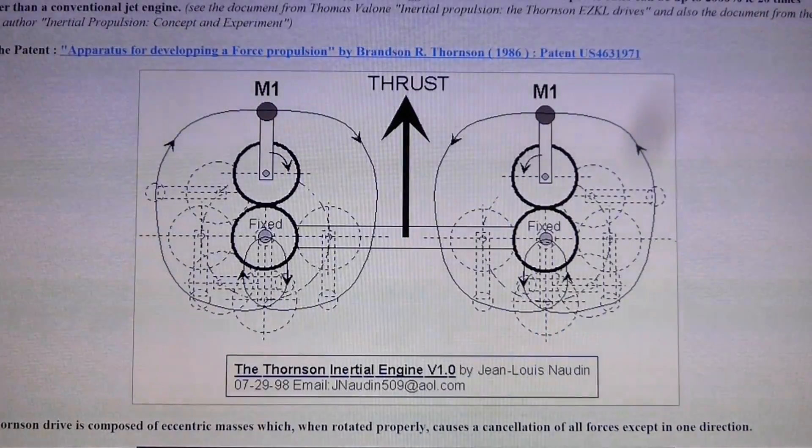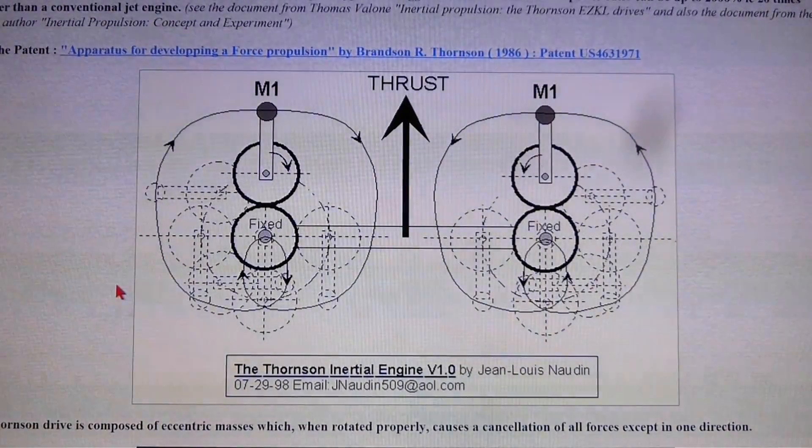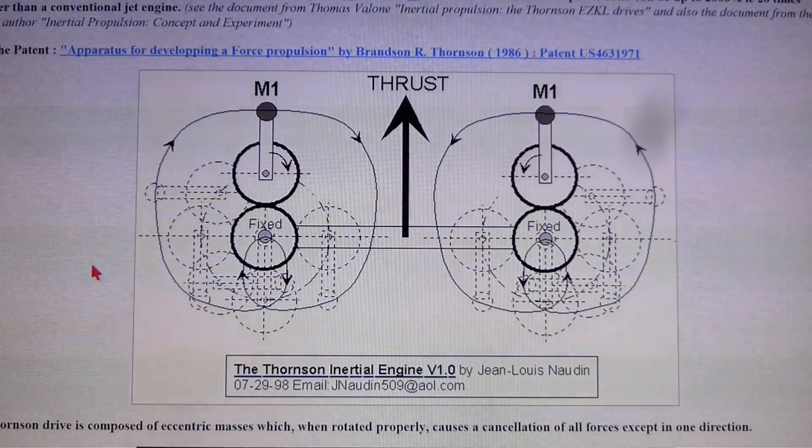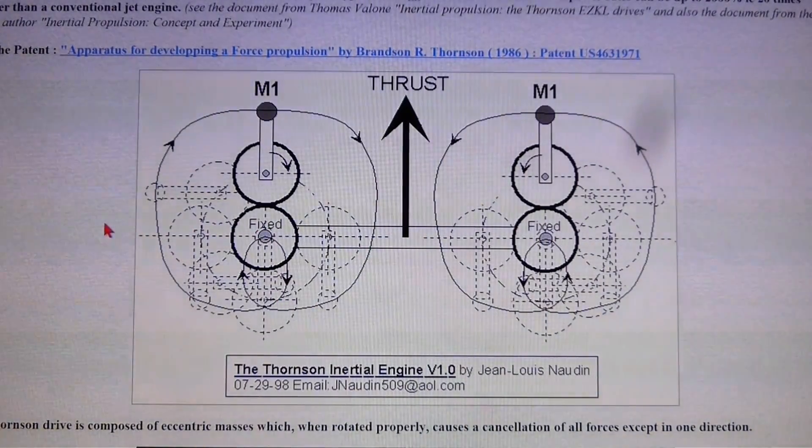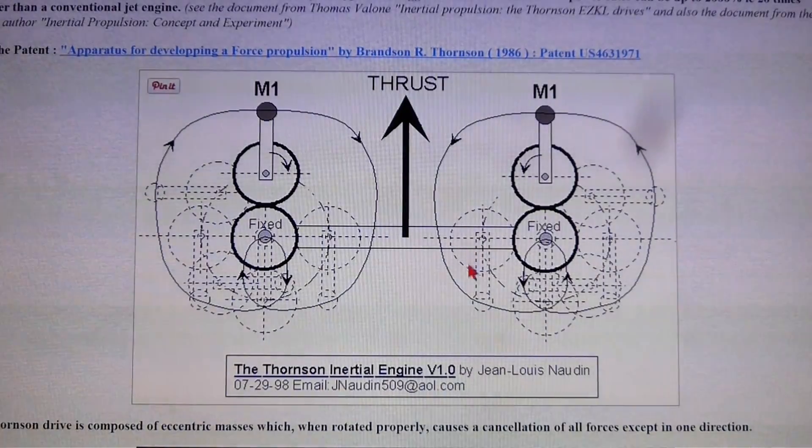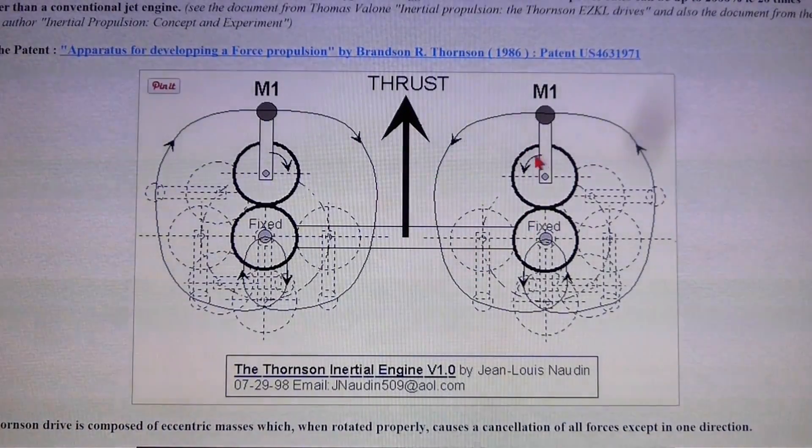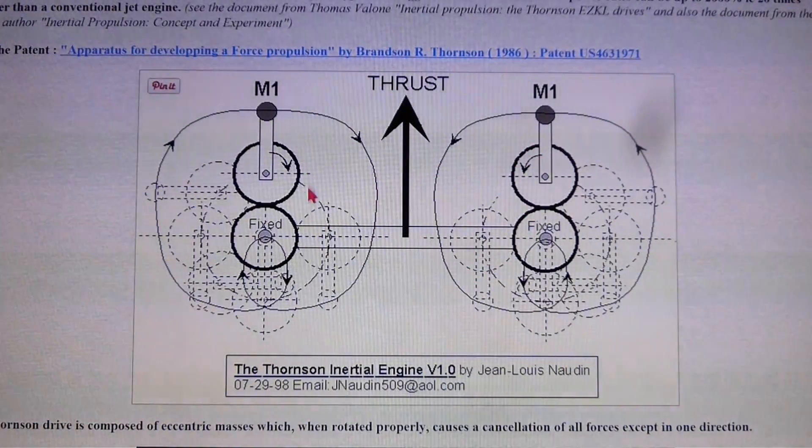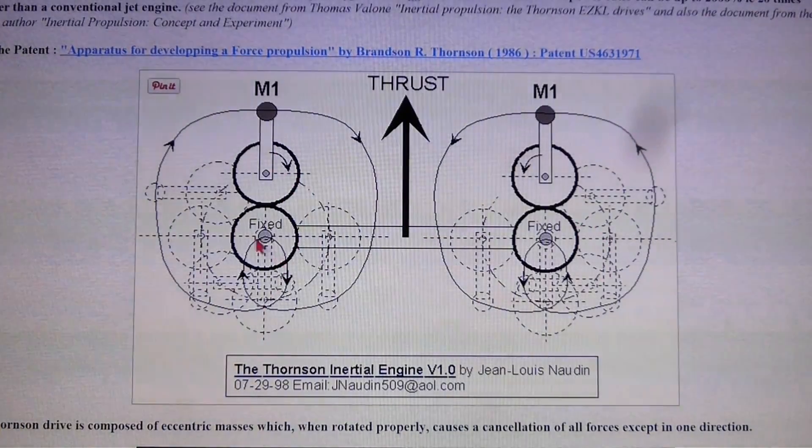There has been a device before that's kind of similar but quite different as well. There's the Thorntzen inertial engine. He's also got two weights that work in opposite directions but he's using gears to drive them and these weights as they come around they do a little swing down here.